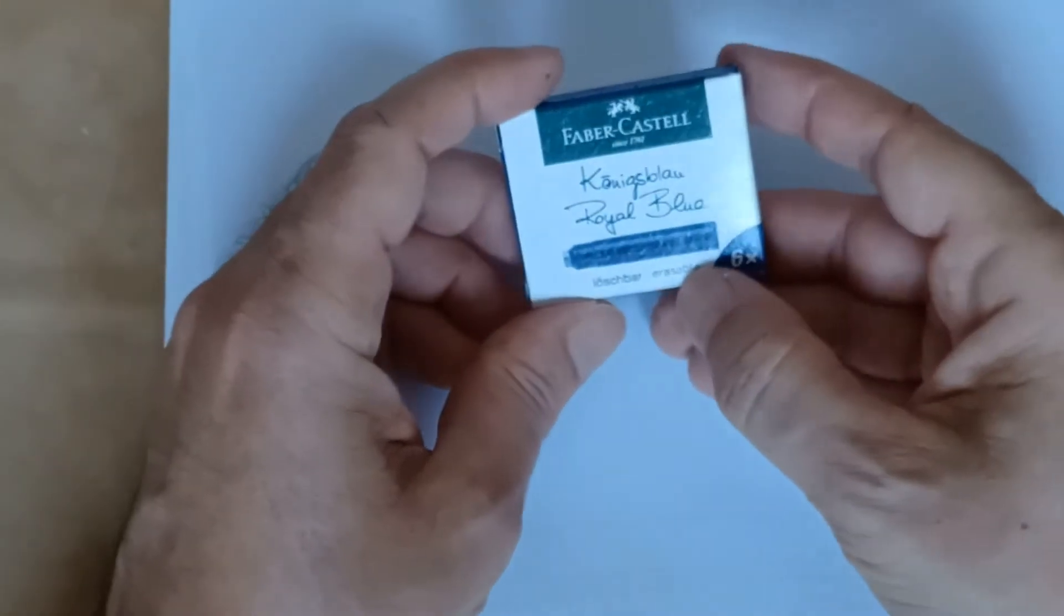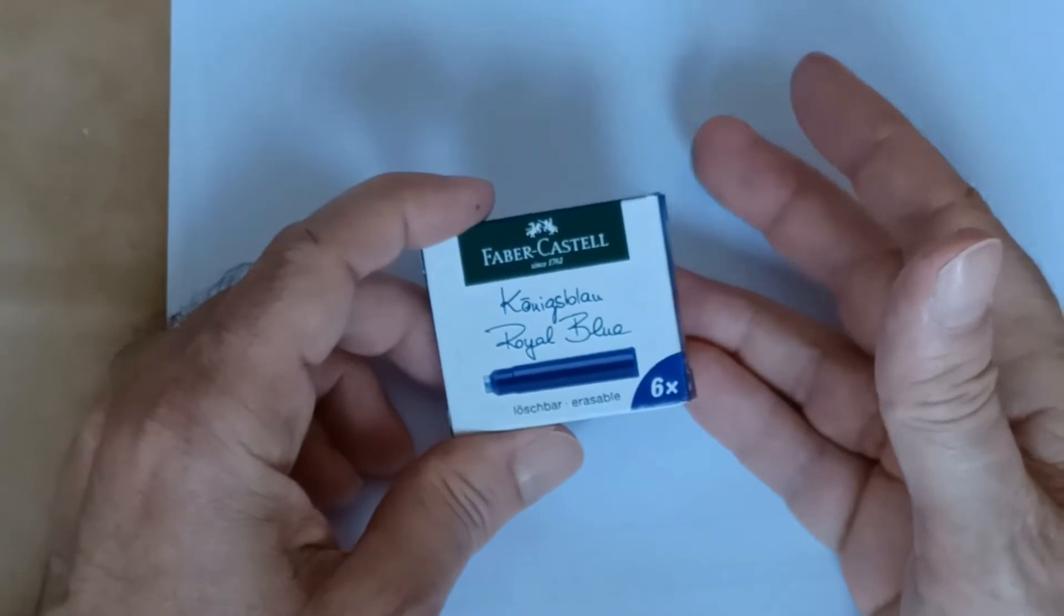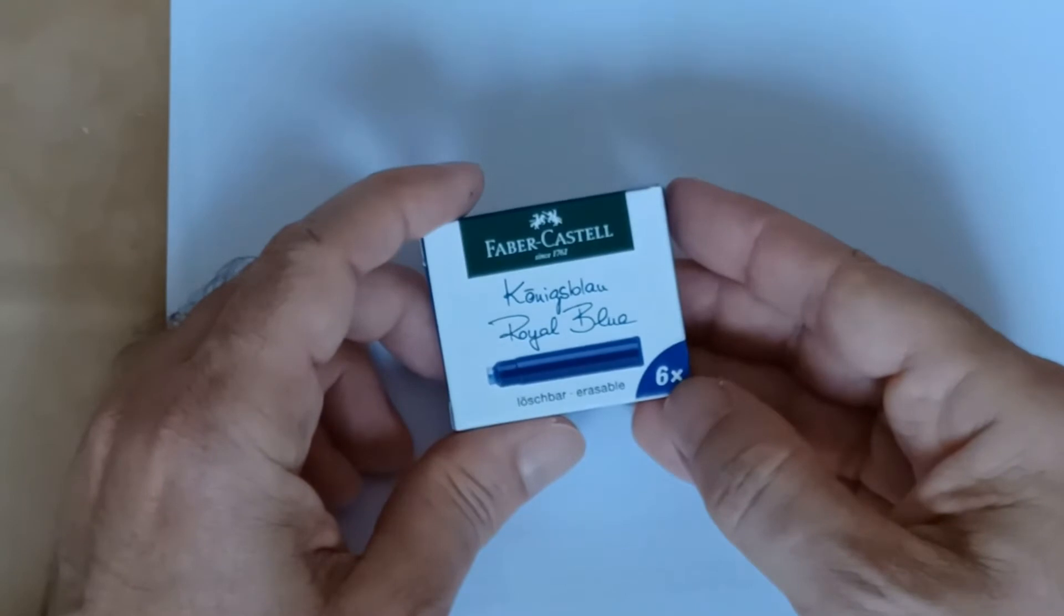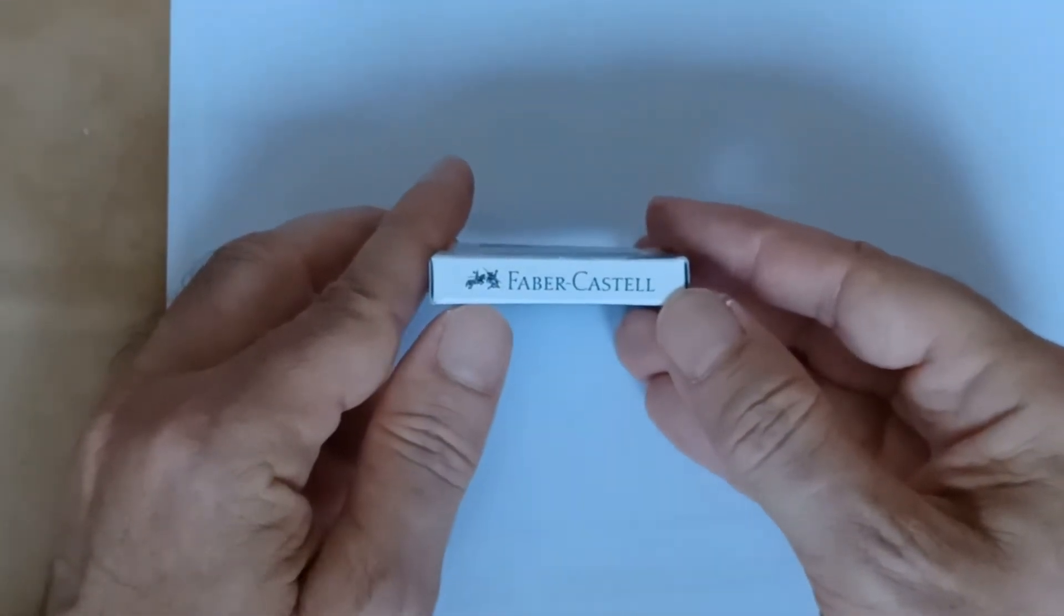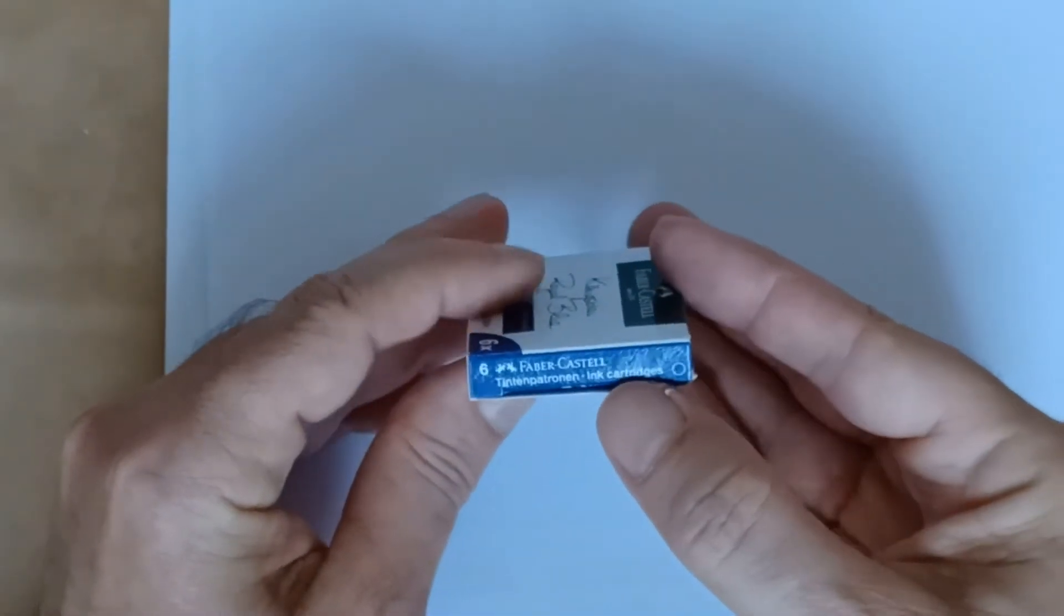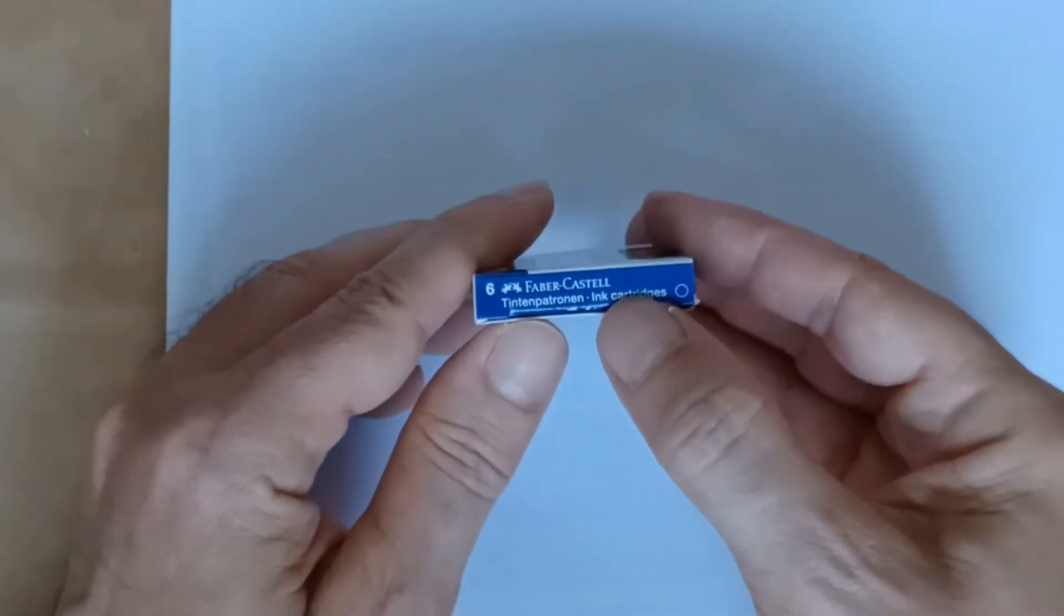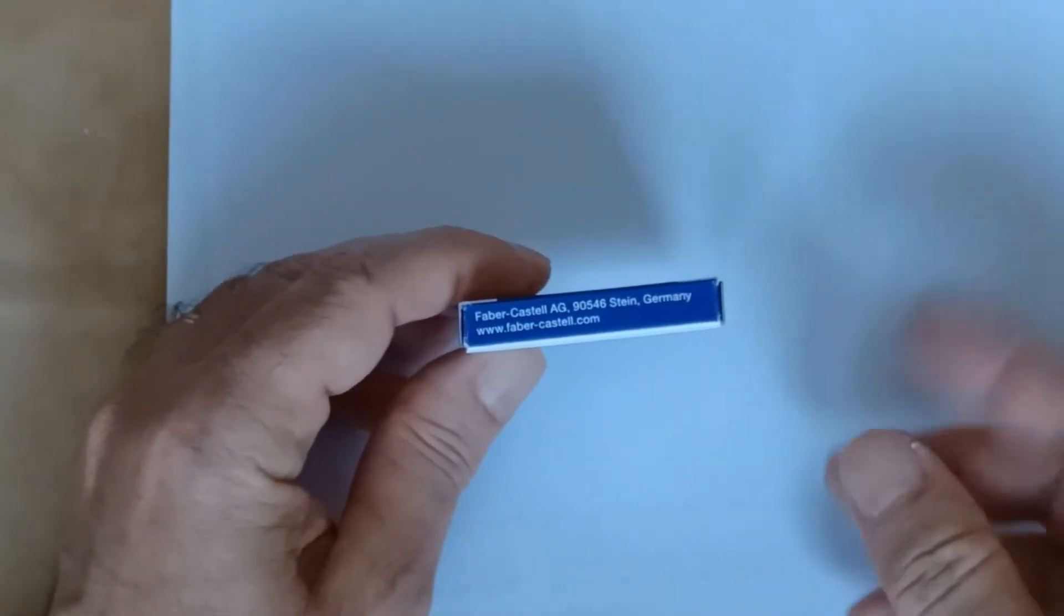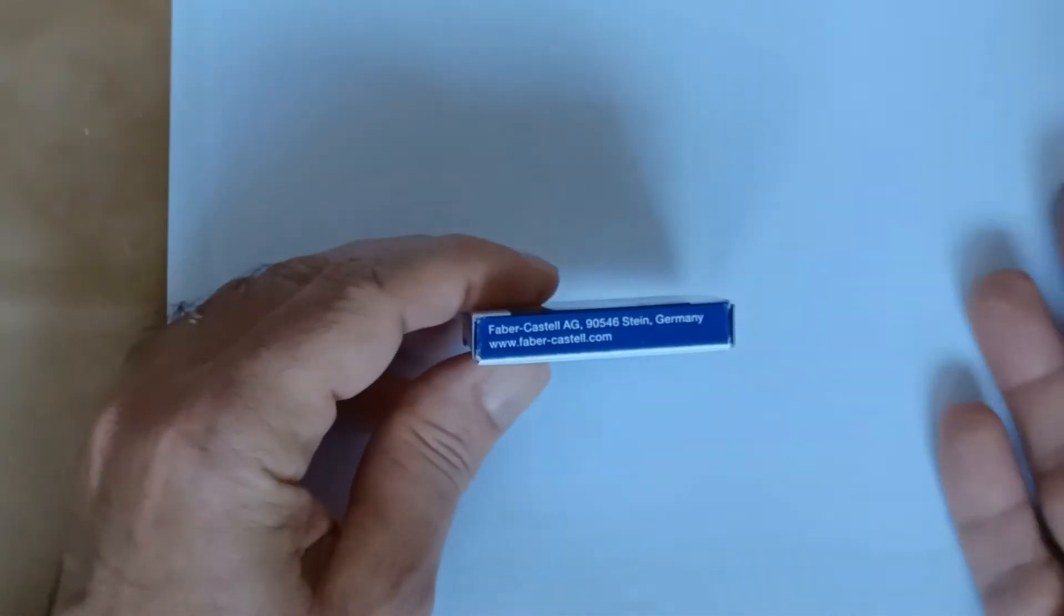Essa tinta, pela informação que a gente vê aqui na caixa, ela pode ser apagada, então não é uma tinta que sirva para assinar documentos. A gente tem que tomar cuidado com isso. São seis cartuchos pequenos de padrão internacional. Desse lado aqui vocês veem o nome da Faber-Castell com a logomarca da empresa.